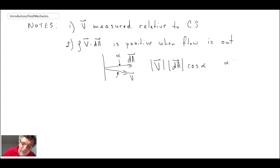And this is a case where alpha is less than 90 degrees or less than pi over 2.